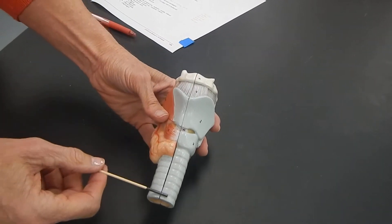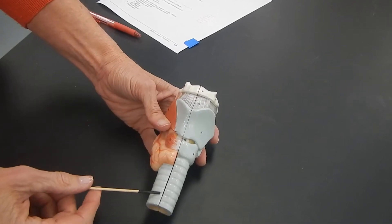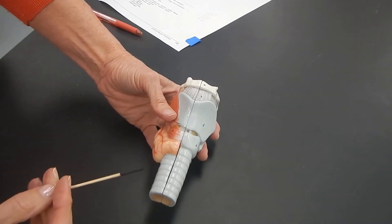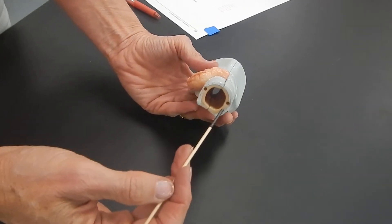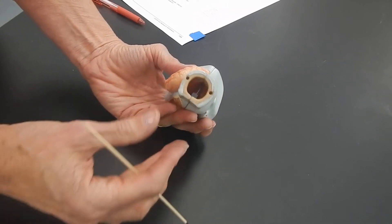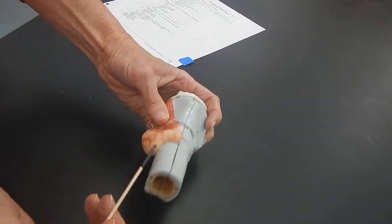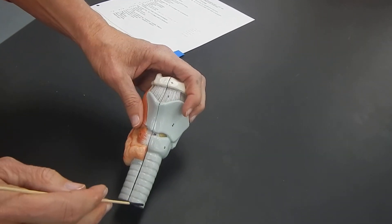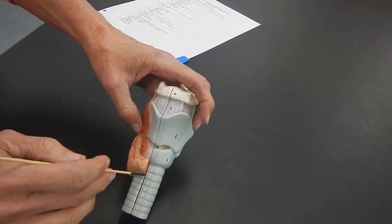This tube down here is the trachea. The trachea is reinforced with rings of cartilage that are shaped like a C. You can see that each ring of cartilage is open in the back. These tracheal rings are often called cartilaginous rings. So here's one, two, three. There are many tracheal rings.